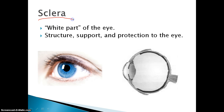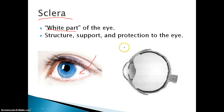Some anatomy of the eye — the sclera. That is the white part of the eye; when we think of the eye, that is primarily the part we think of. It provides structure, support, and protection to the eye. It's a very thick tissue, and it's the outermost covering of the eye.